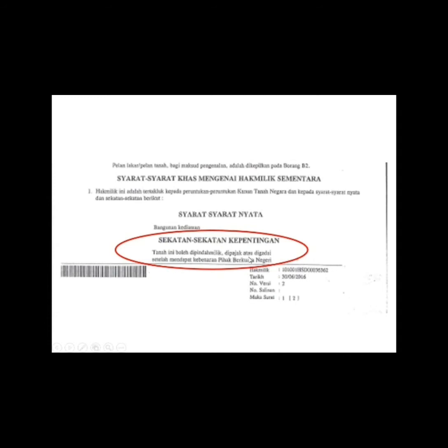It means that you need to have consent whenever you need to transfer your title over to somebody else. Now that you know what's the difference between leasehold and freehold property, let's look at what will happen if your leasehold has expired. Many people didn't know that leasehold is actually a rental from the government. So when your leasehold expires, basically your land will have to return automatically to the government.